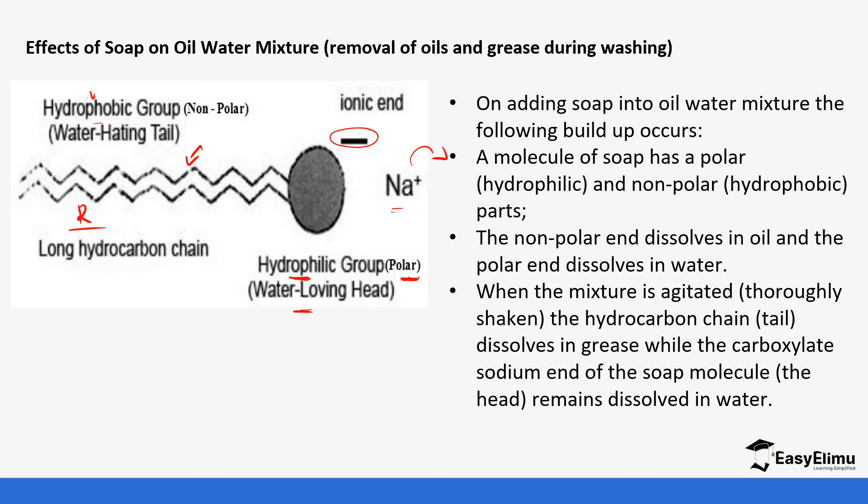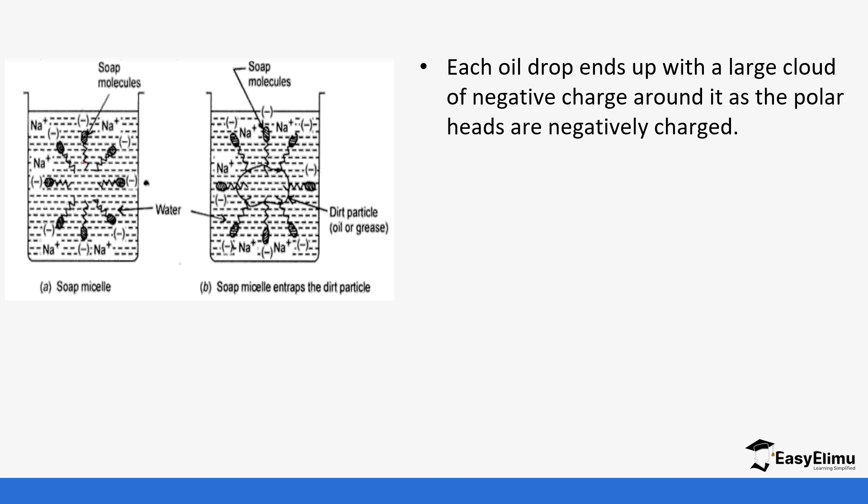When the mixture is agitated or shaken thoroughly—in the case of shaking in washing machines, it's actually shaken by vibration, but agitation happens when it's hand-washed—the hydrocarbon chain dissolves in the grease, while the carboxylate ion end of the soap remains dissolved in water. So this is what happens. You can see the hydrocarbon part dissolves in the oil, and the hydrophilic part attracts to the water molecules. Each drop ends up with a large cloud of negative charges around it. As you can see, there is a drop that is forming around the oil, with the polar heads negatively charged.